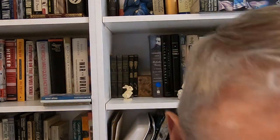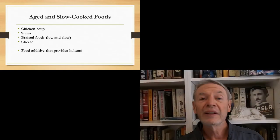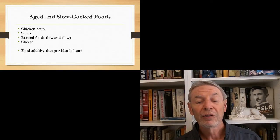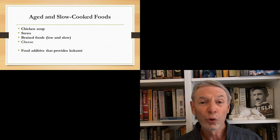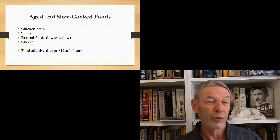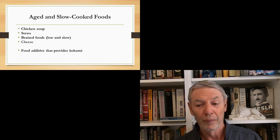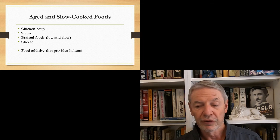Also more in the Western realm is cheese, and also beer, which we can find really anywhere in the world. So these are things that are said to have kokumi. Also it's said that aged and slow cooked foods have kokumi, such as chicken soup or stews or braises, braised foods, things that are cooked low and slow. And I showed you cheese as an example.